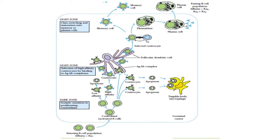Another process that occurs in the B cell is class switching. Class switching is a process in which the B cell secretes antibodies of different classes. The first antibody produced by the B cell against the antigen is always an IgM class of antibody. But in the later stages, this IgM class is switched to another class such as IgG or IgA, depending upon the nature of the antigen.